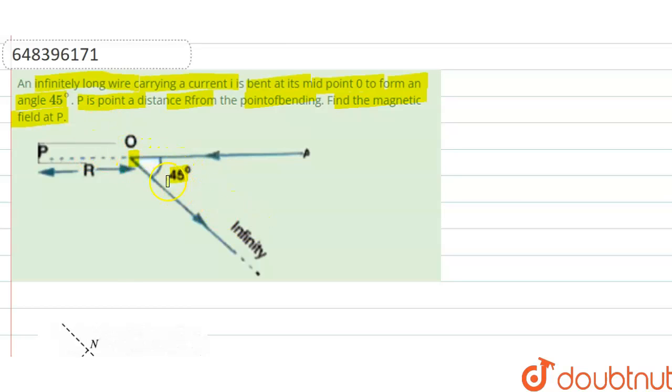We have to calculate the magnetic field at point P. So here the magnetic field due to this horizontal wire will not contribute because the point and the wire is lying on the same line, that's why it will not contribute.